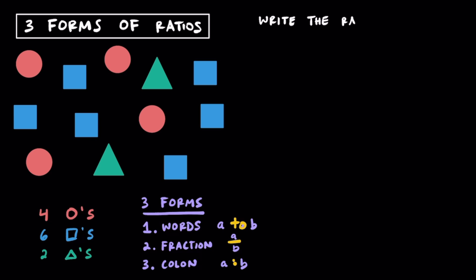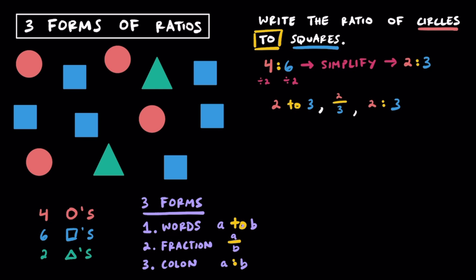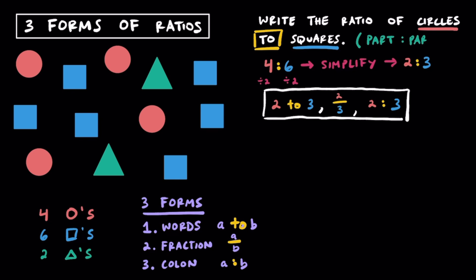Let's try writing a ratio together in all three forms. We're going to write the ratio of circles to squares. Circles — we have four of them, and squares we have six, so we have a ratio of 4 to 6. If we can simplify, always do so. Since 2 is the GCF, we divide both by 2 and get the ratio 2 to 3. Always simplify before writing in the three forms: 2 to 3 with words, 2 to 3 with a fraction bar, and 2 to 3 using a colon. This is a part-to-part ratio, since circles and squares only make up part of all the shapes.